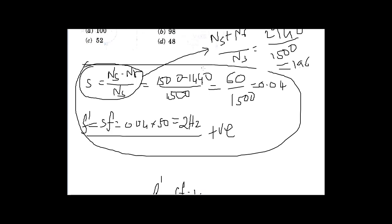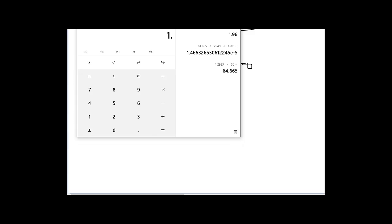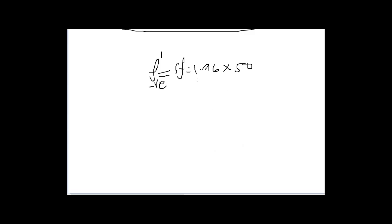The negative sequence frequency f' negative equals s into f, where s is 1.96 into frequency 50 Hertz. Let's do the calculation: 98 Hertz is the required frequency. Let's find it in the options.